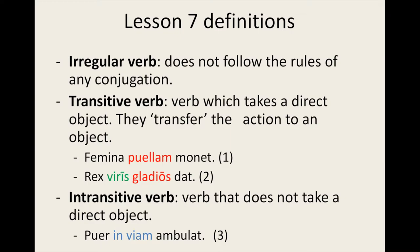We can see that example 2 differs from example 1, as the word viris is in green. Viris is an indirect object. It is also affected by the action of the transitive verb, but indirectly. Indirect objects typically receive the direct object and are often translated in English as 'to something' or 'to someone', or 'for something' or 'for someone.' In this example we have: 'The king gives swords to the men.' Gladios is the plural accusative of the second declension noun gladius. The swords are the direct object being acted upon by the transitive verb dart, 'he gives.' Viris is the indirect object, which is acted upon by the transitive verb by way of the direct object, gladios.